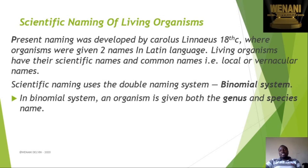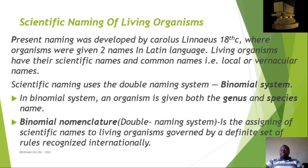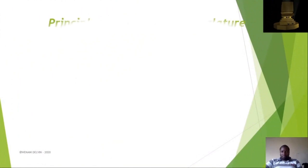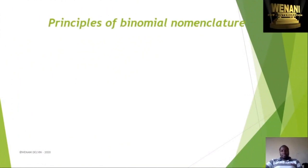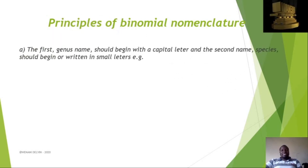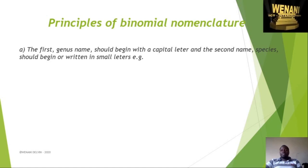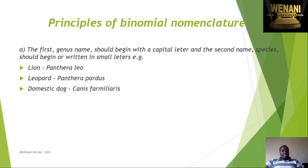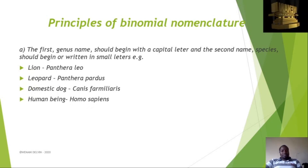In the binomial system, an organism is given both a genus name and a specific name. Binomial nomenclature is the assigning of scientific names to living organisms governed by a defined set of rules organized internationally. The principles of binomial nomenclature: Principle one — the genus name should begin with a capital letter, and the species name should begin with a small letter. For example: lion — Panthera leo; leopard — Panthera pardus; domestic dog — Canis familiaris; human beings — Homo sapiens; maize plant — Zea mays.